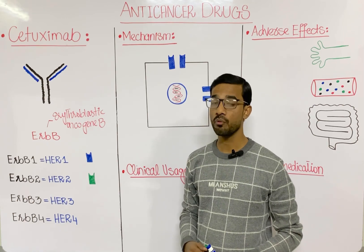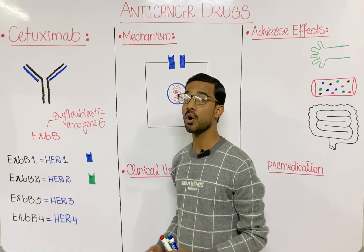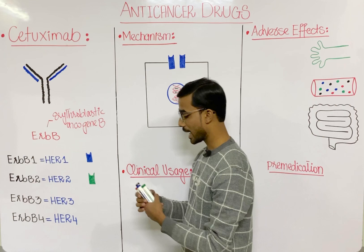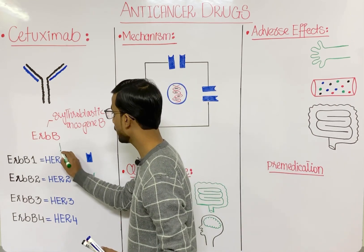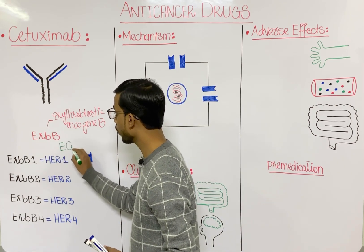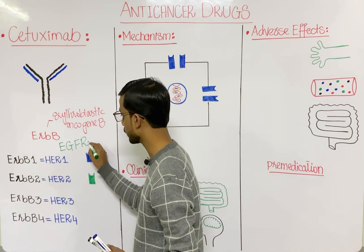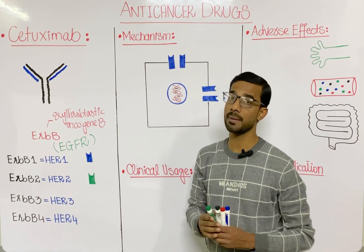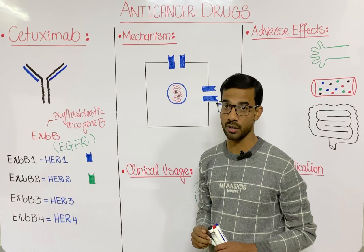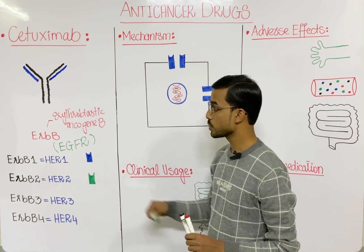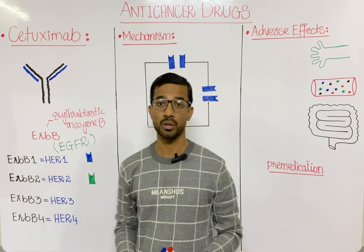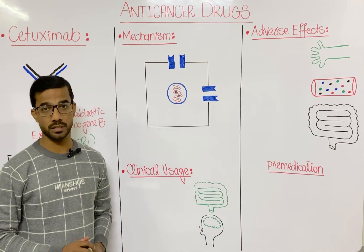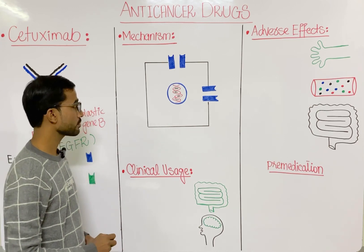In this lecture we will focus on erythroblastic oncogene B1, also called HER1. Another name for HER1 is the epidermal growth factor receptor, or EGFR. These are basically different transmembrane proteins that are present on different cells in our body.